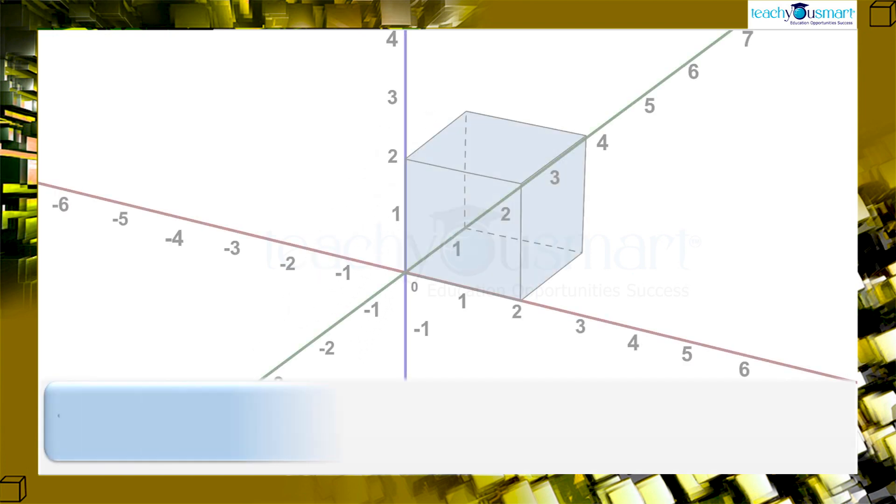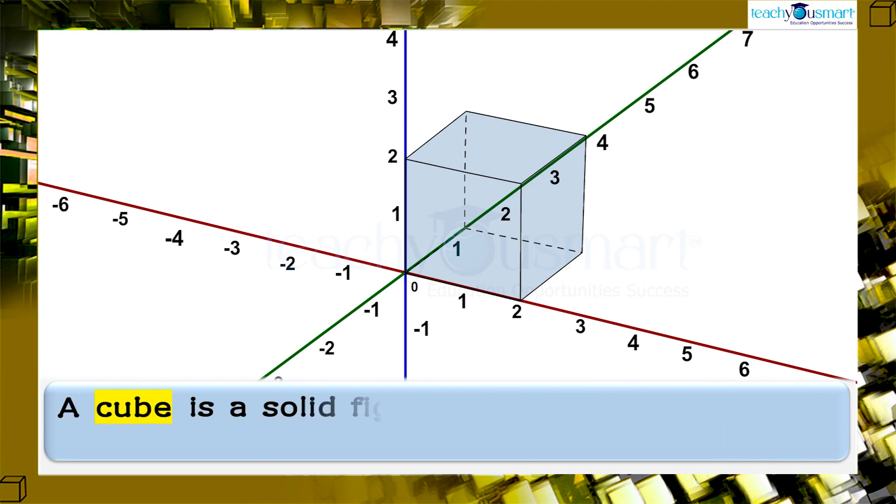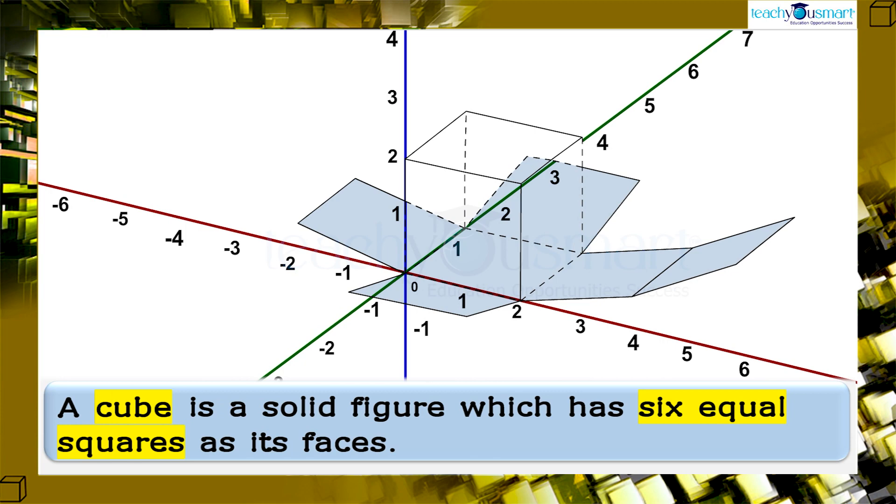Look at this dice. What is its shape? That's right, it's a cube. A cube is a solid figure which has six equal squares as its faces.